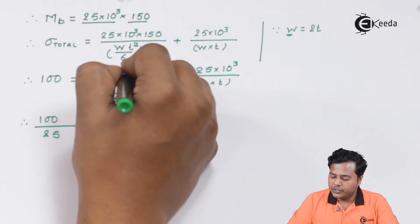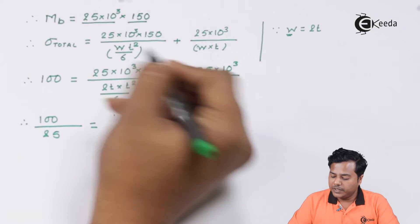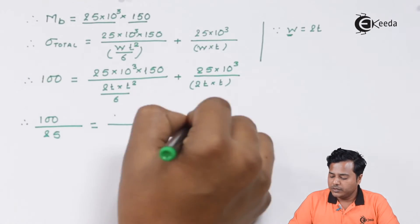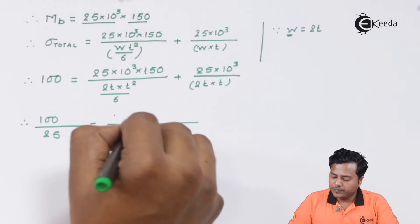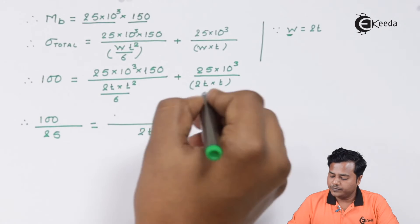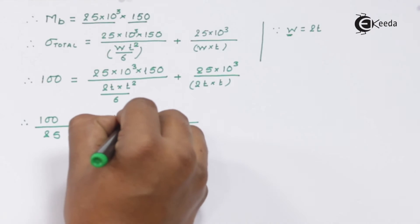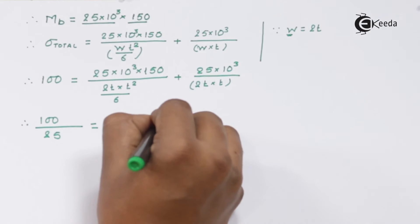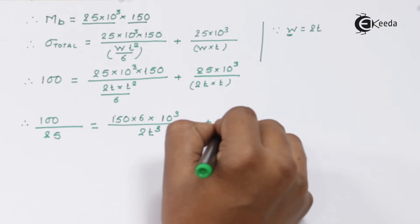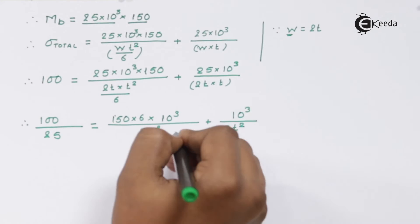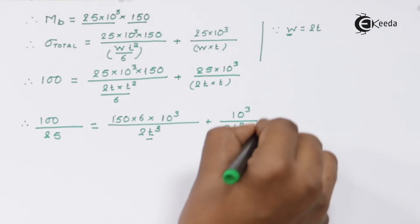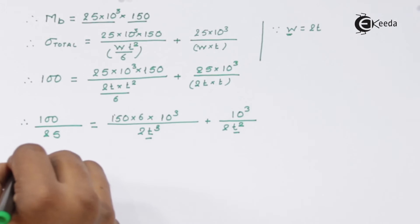Therefore I am taking 10³ common and I am taking 25 common. The leftover thing is 2T³, 150×6×10³ plus 10³ divided by 2T². When you solve and evaluate this particular equation, you get the value of T. As we evaluate the value of T, we get the value as 38.5 mm.